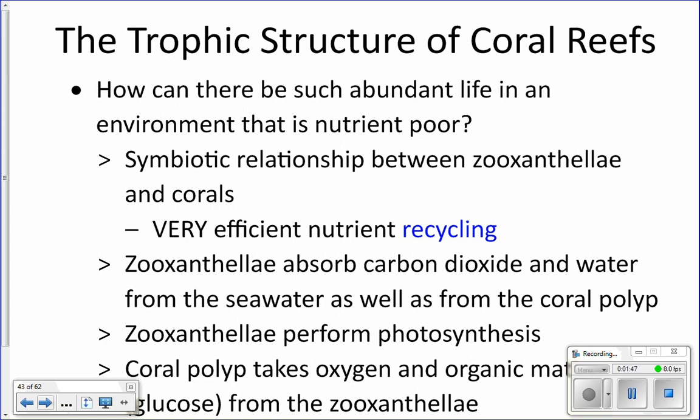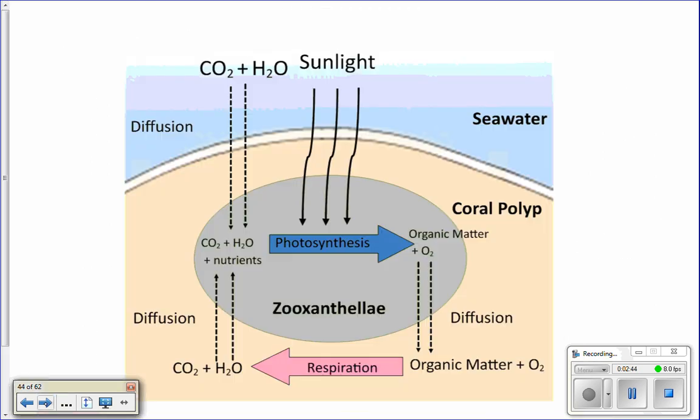How do we get so many animals living in a place where there aren't very many nutrients? You need nutrients to do photosynthesis if you're a primary producer. One of the ways corals make sure the nutrients they do have stick around is they're very efficient at recycling them. Zooxanthellae and coral have a mutualistic symbiotic relationship — they take nutrients from the zooxanthellae, pass them to the coral, the coral uses them and passes them back, with very little lost in the process.